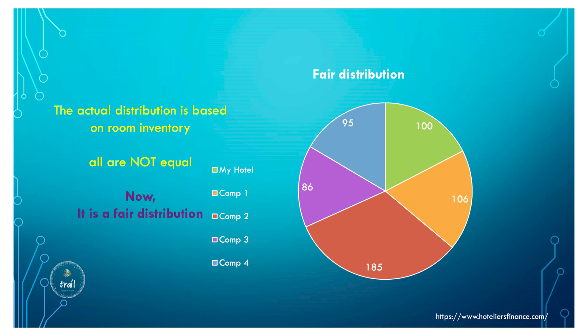To calculate the actual market share, we find the percentage of inventory each hotel is holding. Adding all rooms gives 17,160 rooms total. Dividing my hotel's 3,000 rooms by 17,160 gives a fair market share of 17.5%. Competition one gets 18.5%, competition two 32%, competition three 15%, and competition four 16%. Now we know each hotel's fair market share and the tussle begins over who gets how much.